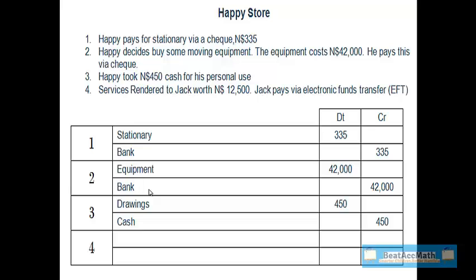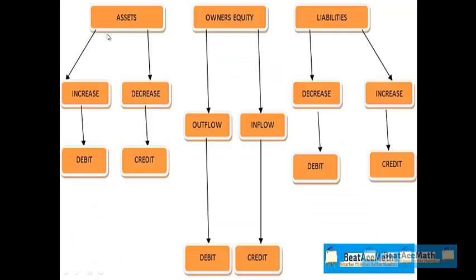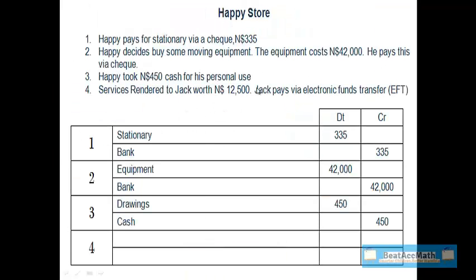Finally, let's look at number four. Services rendered to Jack worth $12,500 — Jack pays via electronic transfer. The two items involved are services rendered, which is an income, and bank. All transactions done via electronic transfer relate to the bank. Bank is an asset and our bank increased, so if an asset increases we need to debit the asset. Services rendered is an owner's equity item and results in an inflow of funds to the company, so we should credit services rendered.